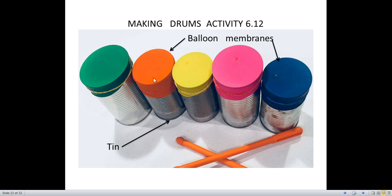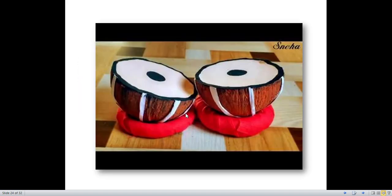Making drums — this is an interesting activity you can all do at home. For this activity you need some tins with large openings, some balloon membranes, and some rubber bands. As shown in the figure, keep the balloon membranes stretched on the opening of the tin and make a drum. Beat it to a rhythm. You can make drums like this and try to play to a rhythm.